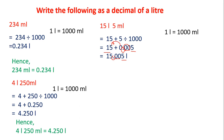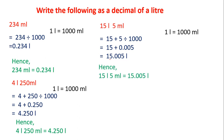Then I add the ones place to the ones place: 5 plus 0 equals 5. The tens digit — there is no tens place in 0.005, so I write 1 in the tens place as it is. Hence, we got the answer as 15.005 liter. This way, we convert given milliliters or liters and milliliters to the decimal of a liter.